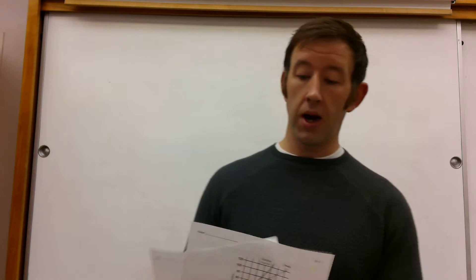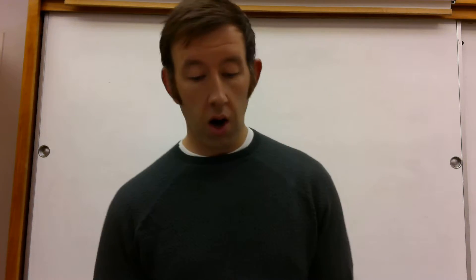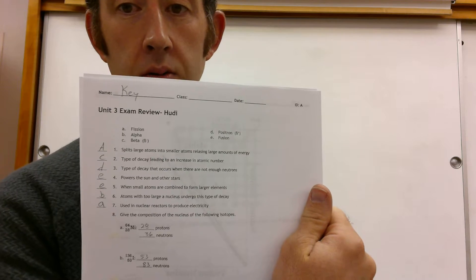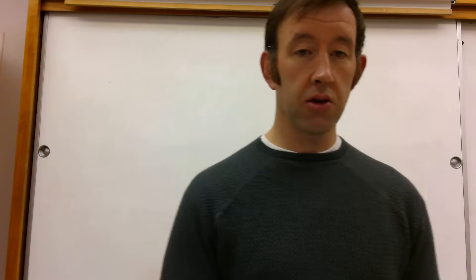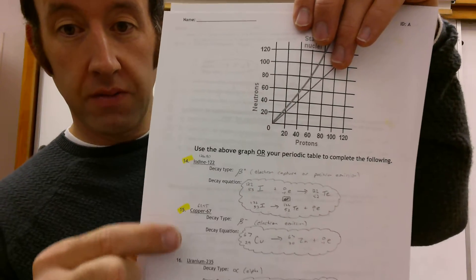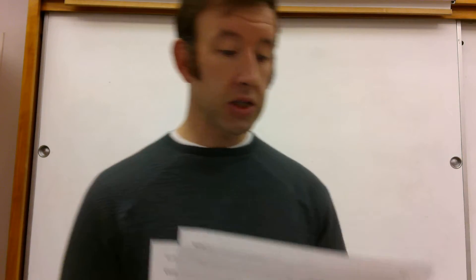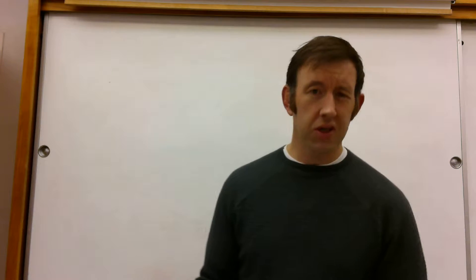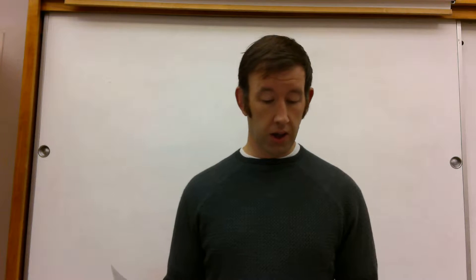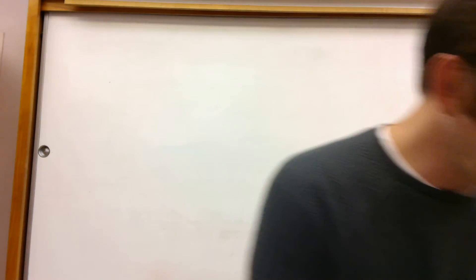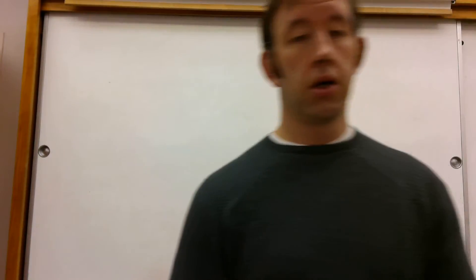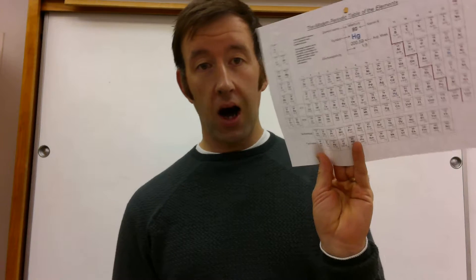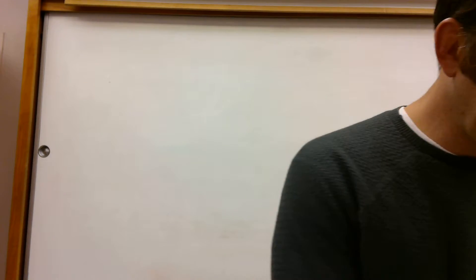This particular tutorial, we are focusing on the exam review that I handed out for Unit 3, and in particular numbers 14 and 15 on the decay equation section. And then on the back page there, numbers 17 and 18, which is just a sampling of those half-life type calculations that we've been working on. You definitely want to have that exam review with you, and of course your handy periodic table. We're going to refer to that often and a calculator for some of those more complex calculations.